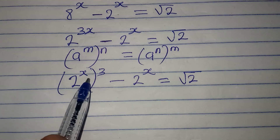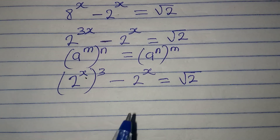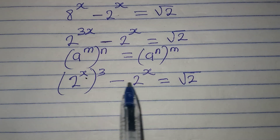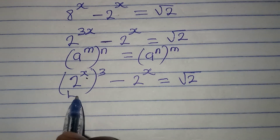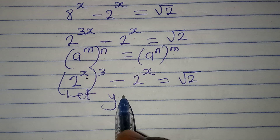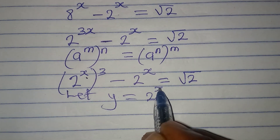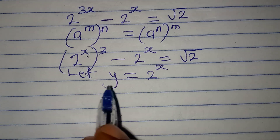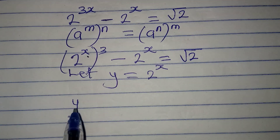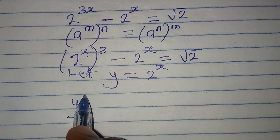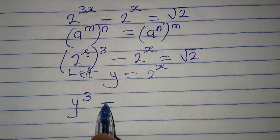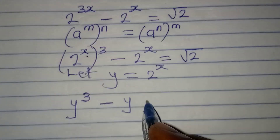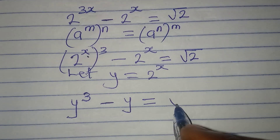The reason I wanted to separate these two is because I needed to have 2 to the power of x in two places. So now let y be equal to 2 to the power of x, meaning that anywhere I find 2 to the power of x I'm going to write y. So here I will write y to the power of 3 minus y, and this is equal to square root of 2.